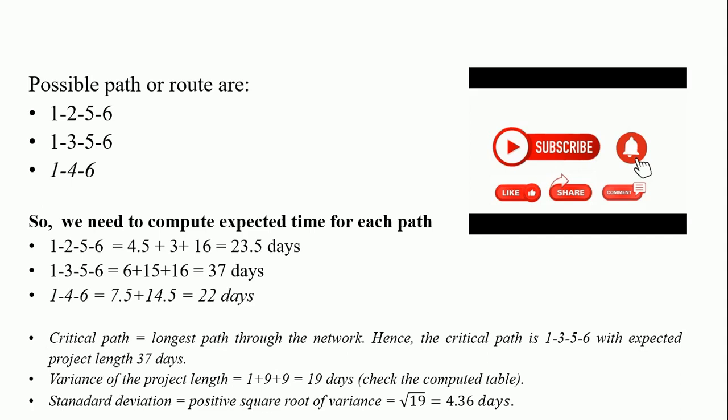And that is 1-3-5-6 which is 37 days. So that 1-3-5-6 is our critical path and that 37 is called the critical length.